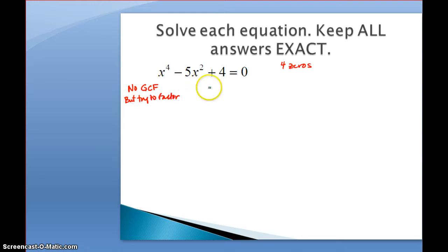So I'm still saying what multiplies to AC, so that's 4. So 1 and 4, 2 and 2, and makes it a negative 5. Well, if I make both of those negative, so my factor would be x squared minus 1 and x squared minus 4 equals 0. So I factored. So I'm going to step 2, set each factor equal to 0. So set this factor equal to 0 and set this factor equal to 0. And now I'm going to solve.